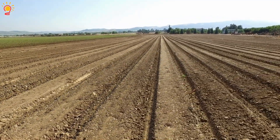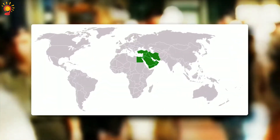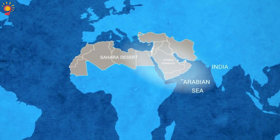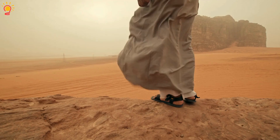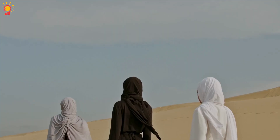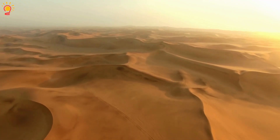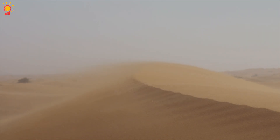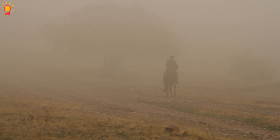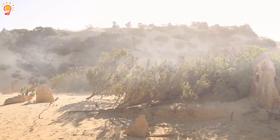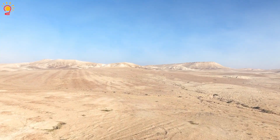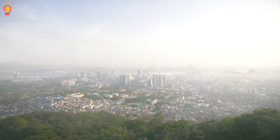Dust from other countries — Middle East and North Africa: The Sahara Desert and the Arabian Peninsula send large amounts of dust across the Arabian Sea to India. The Shamal winds blowing from Iraq, Saudi Arabia, and Iran carry fine desert sand to western and northern India. From Pakistan and Afghanistan, the Karakum and Kizilkum deserts of Central Asia generate dust storms that travel into Rajasthan, Punjab, and Gujarat. Winds from Baluchistan and southern Afghanistan bring in additional fine dust.